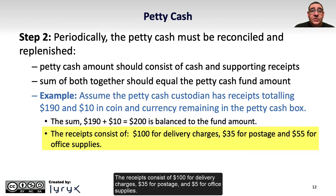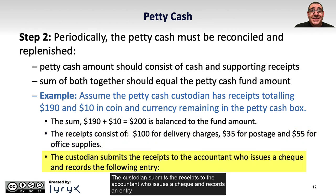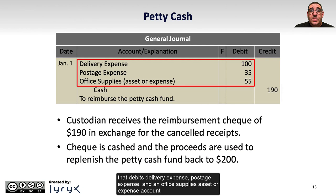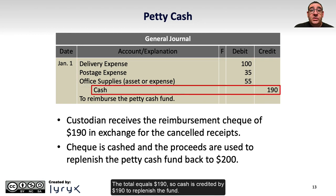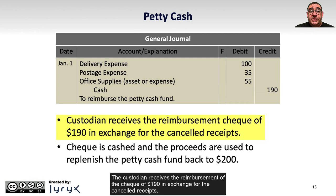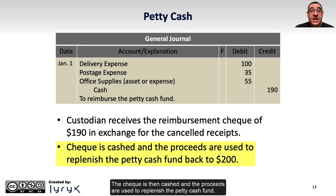The receipts consist of $100 for delivery charges, $35 for postage, and $55 for office supplies. The custodian submits the receipts to the accountant who issues a check and records an entry that debits delivery expense, postage expense, and an office supplies asset or expense account for $100, $35, and $55 respectively. The total equals $190, so cash is credited by $190 to replenish the fund. The custodian receives the reimbursement check of $190 in exchange for the cancelled receipts. The check is cashed and the proceeds are used to replenish the petty cash fund, bringing it back to $200 — the $10 in remaining cash plus the $190 check proceeds.